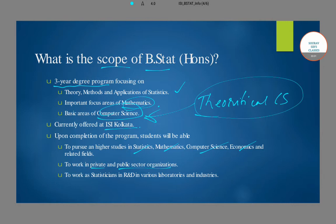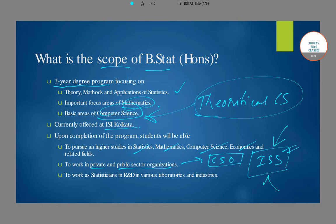Apart from academic careers, you can also work in private and public sector organizations. In public sector, there is the Central Statistical Organization (CSO), which you can get into after completing the B.Stat program. There is also the Indian Statistical Service (ISS), a prestigious service offered through the UPSC board — once selected, you are recruited into this service. In private organizations, data analytics is a very niche and high-level field you can work in, and you can also work as a statistician in research and development in various laboratories and industries.